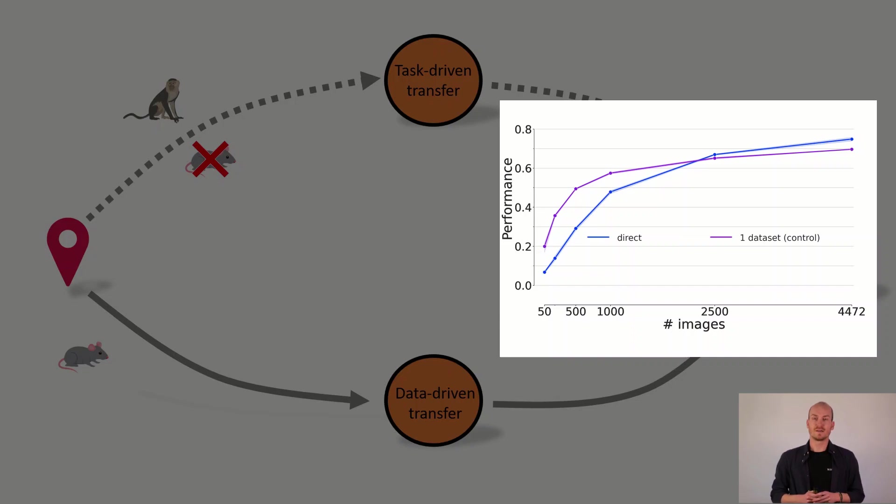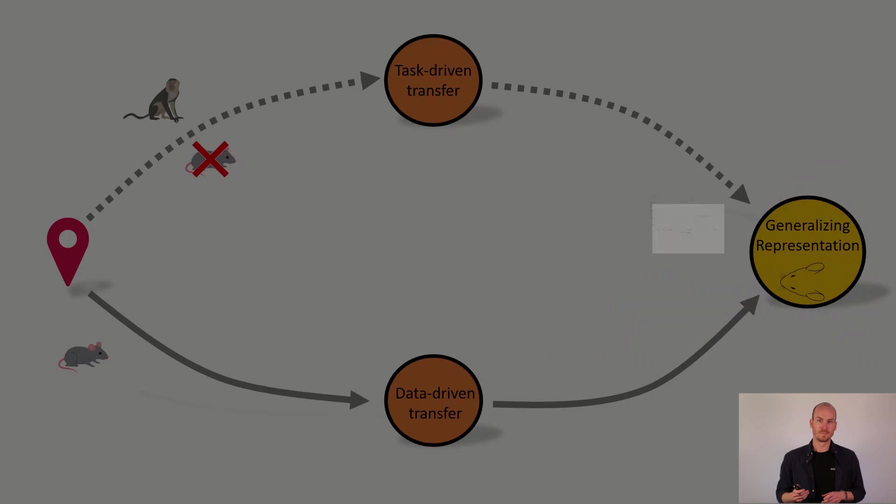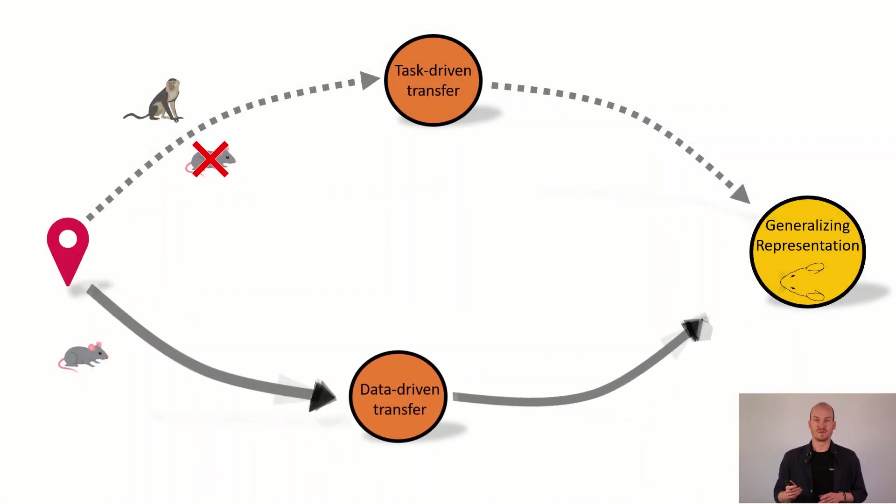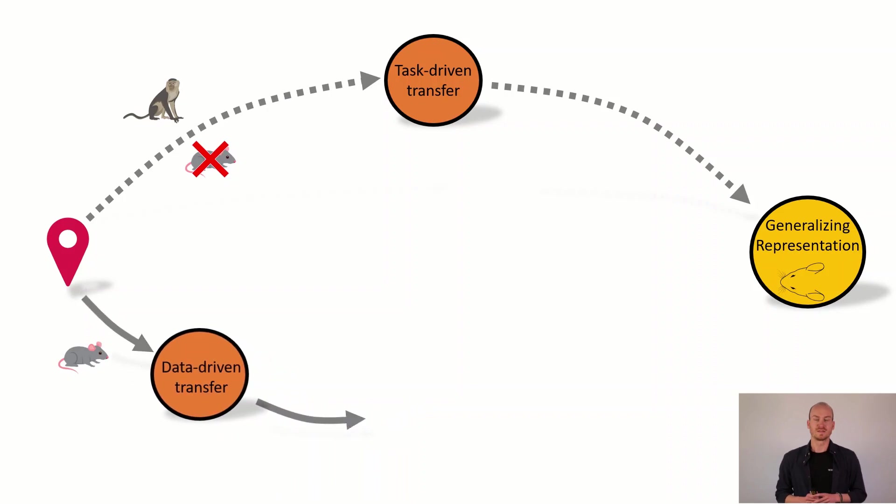But now in the high data regime we do not catch up with the direct trained representation. So far so good. It did not work with one dataset so I think we have to take one step back. Let's think of some methods that could help us improve the yields that we get from our data for the data-driven transfer.